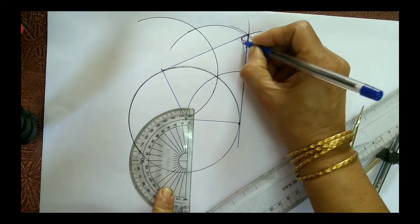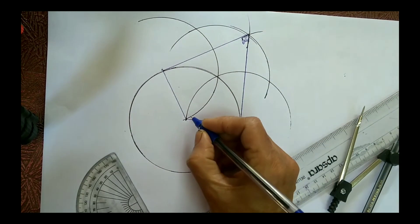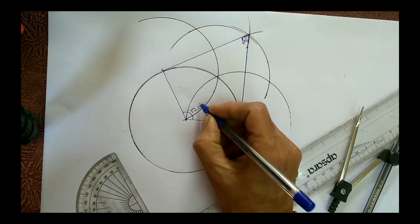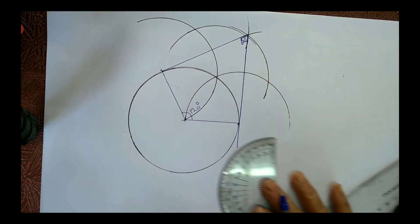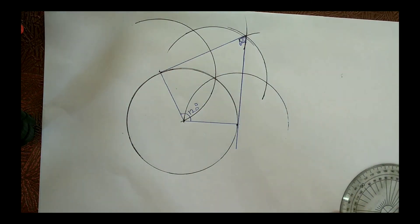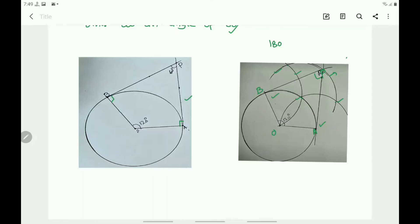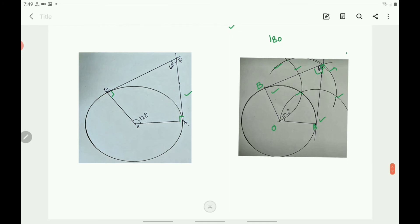By using the protractor or by using the compass, you can draw the tangents — the angle at the center is 120 degrees. After drawing the two radii OA and OB with an angle of 120 degrees, the next step is to draw the perpendicular at A and B. There are two methods: one by using the protractor and the other by using the compass.